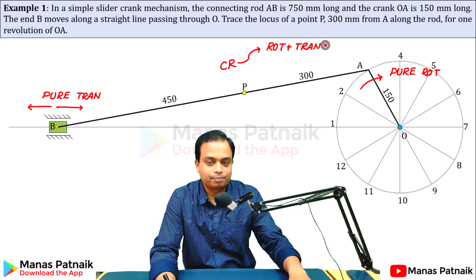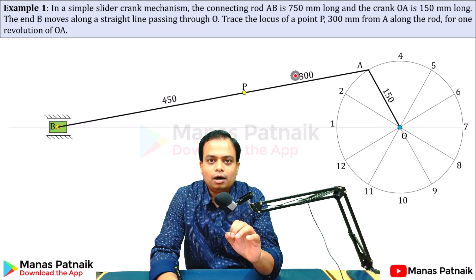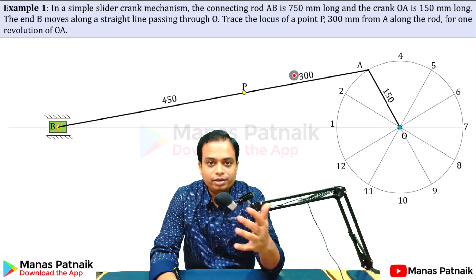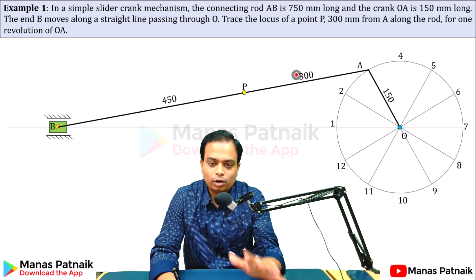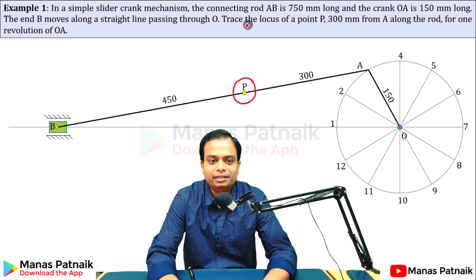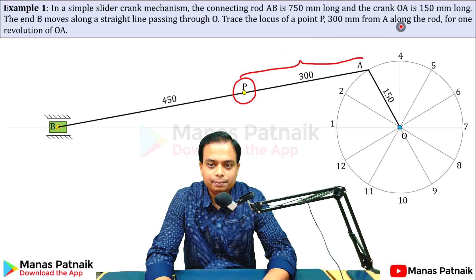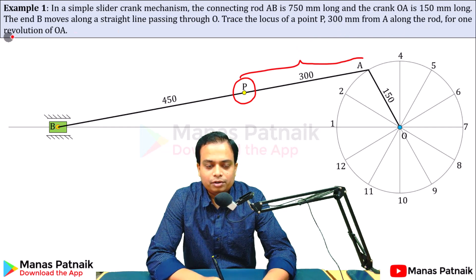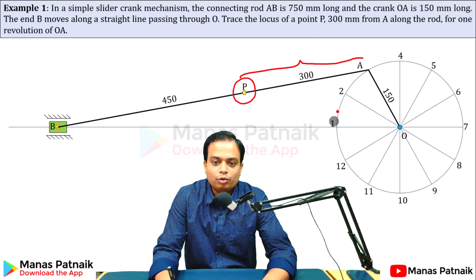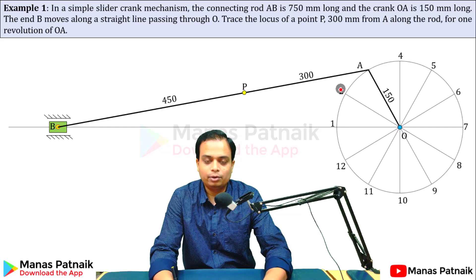The dimensions of all of these links have been given. The connecting rod AB is 750 mm long (450 + 300 = 750), and the crank OA is 150 mm. What exactly do we need to do? You need to trace the locus of a point P that is 300 mm from A, for one full revolution of OA. You need to keep track of this point and draw its locus.